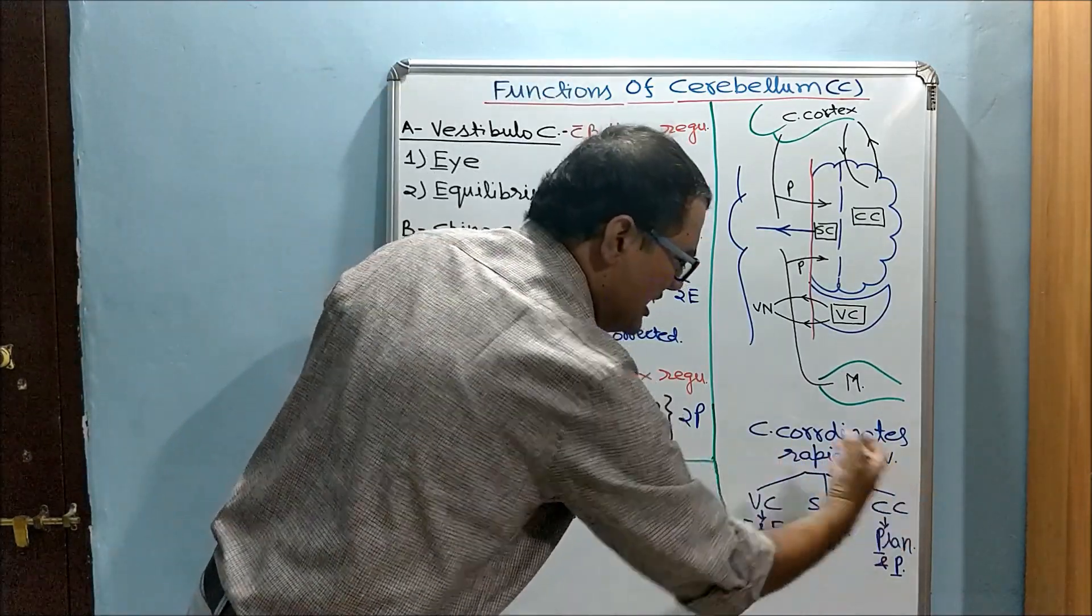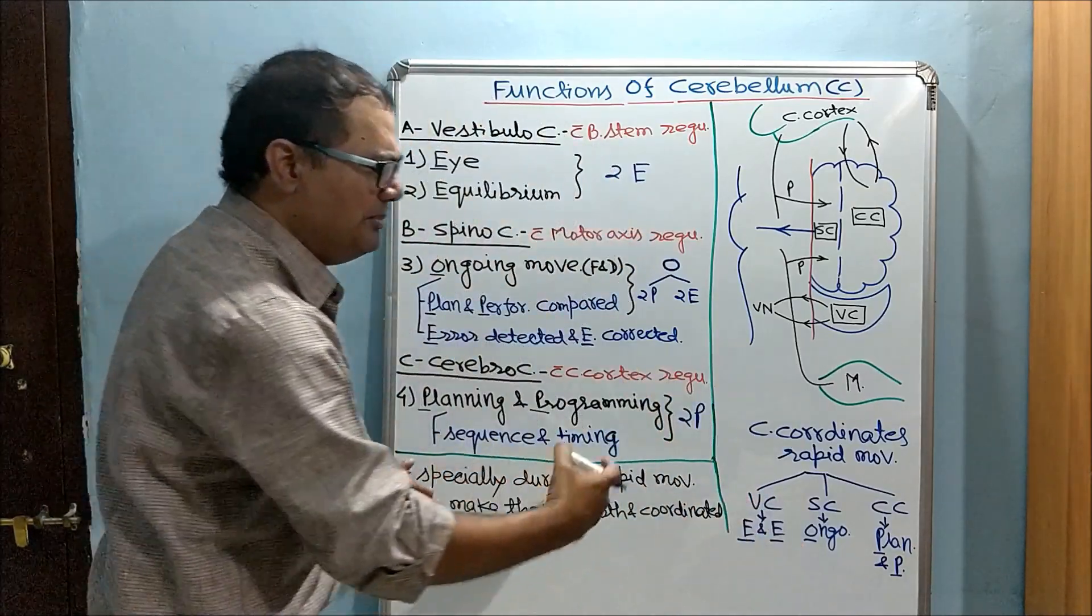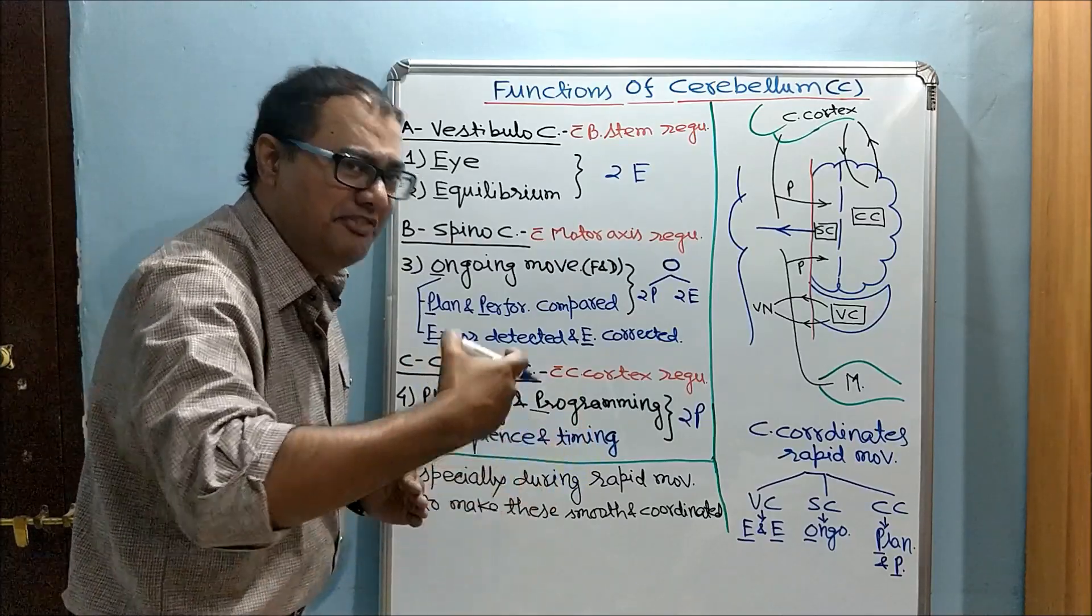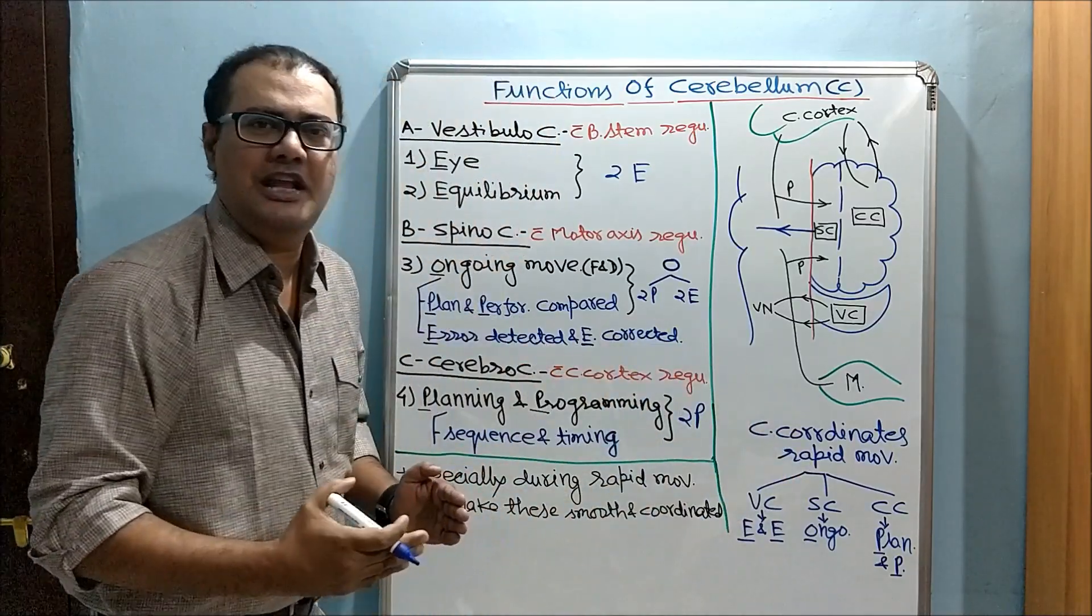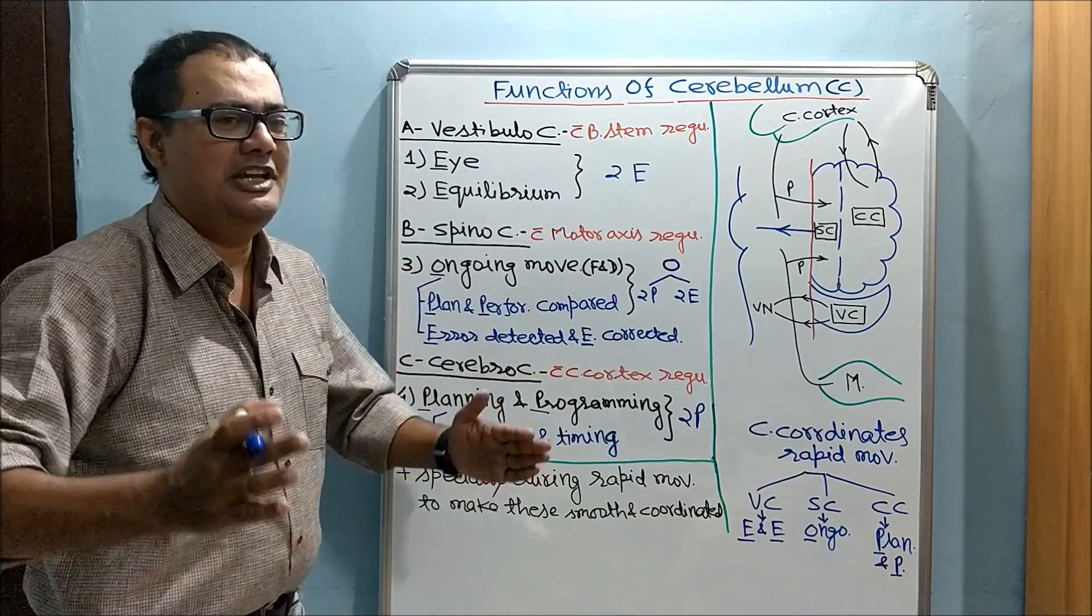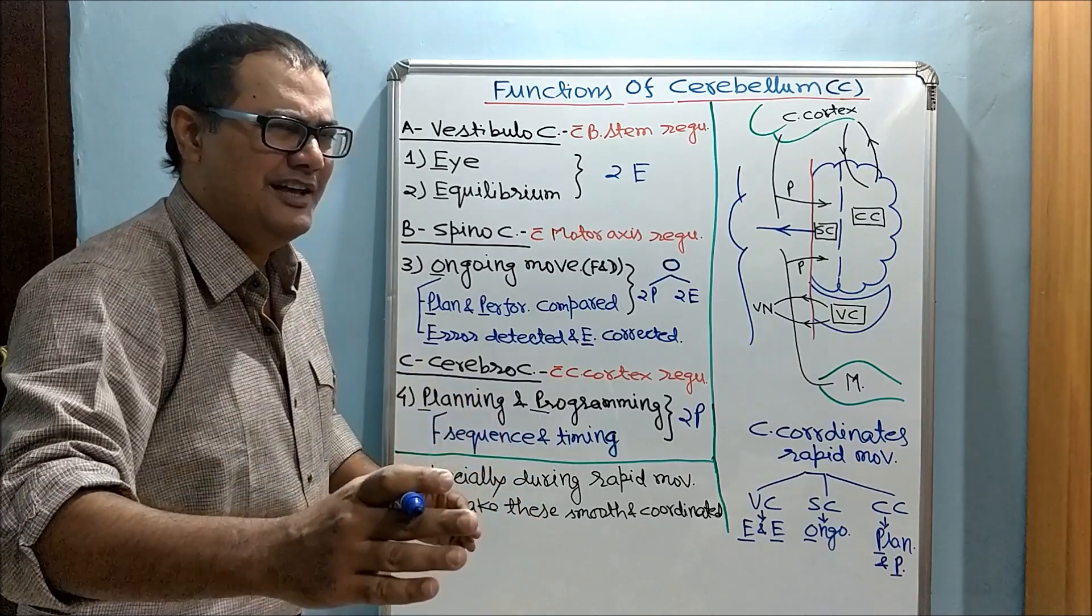Before motor activity starts, planning involves cerebrocerebellum. Eye and equilibrium regulation involves vestibulocerebellum, and ongoing rapid motor activity feedback regulation involves spinocerebellum. With cerebellum, rapid motor activity is possible, pace is possible, race is possible. Thank you.